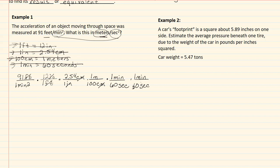Now it's a matter of putting it into my calculator. Everything on top is multiplied. Everything in the denominator is divided. I took 91 times 12 times 2.54 divided by 100 divided by 60 divided by 60, and I got that this equaled 0.0077 meters per second squared.